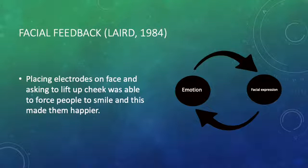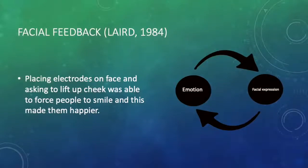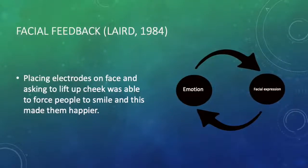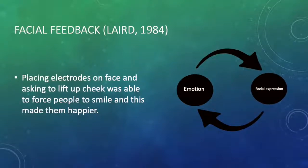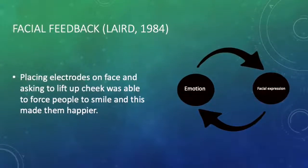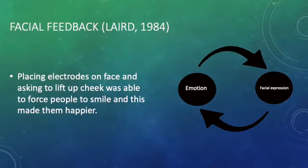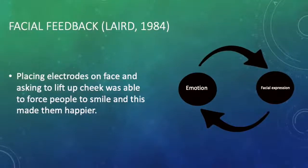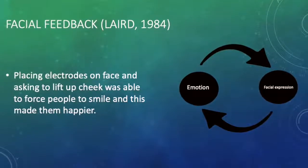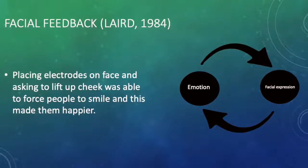Facial feedback — Laird, 1984. By placing electrodes on the face and asking participants to lift up a cheek, Laird was able to force people to smile, and this made them happier. This shows that there is a facial feedback loop in which emotions are influenced by facial expressions, which are also influenced by emotions.